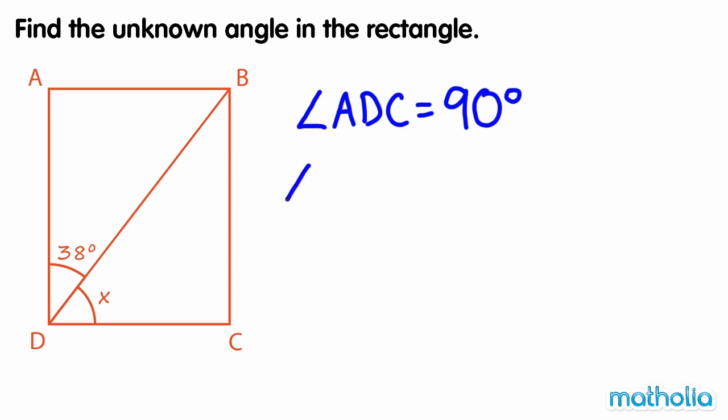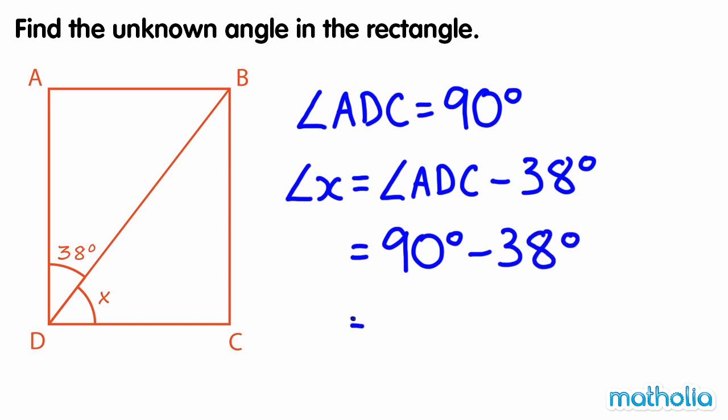We can find angle X by subtracting 38 degrees from angle ADC, which is 90 degrees. 90 degrees minus 38 degrees is 52 degrees, so the unknown angle is 52 degrees.